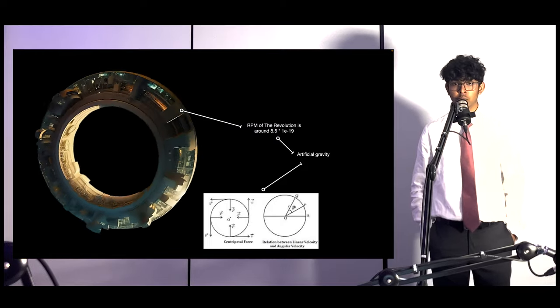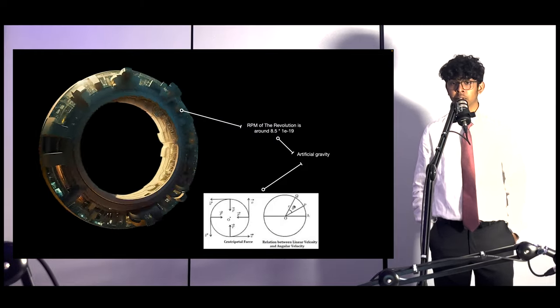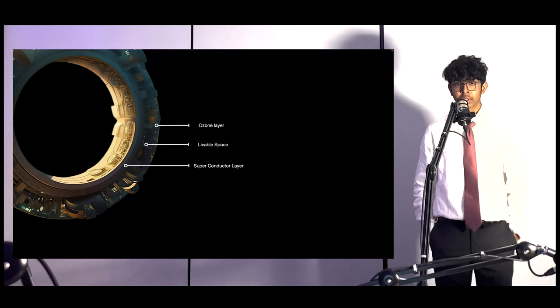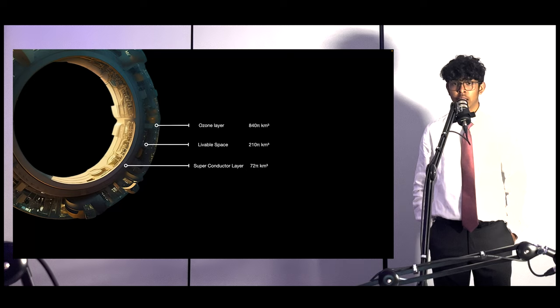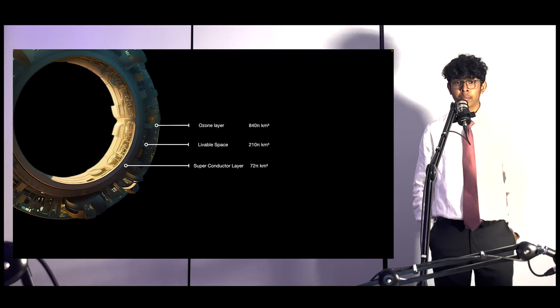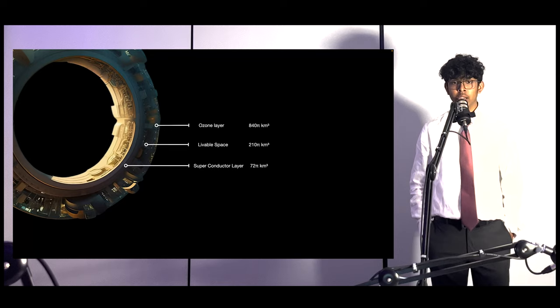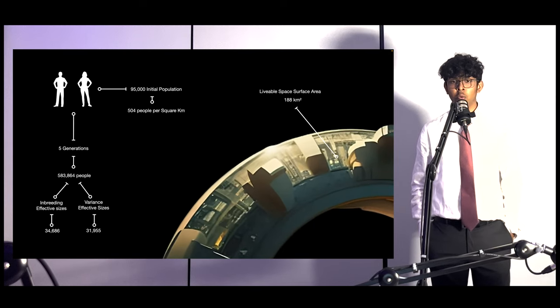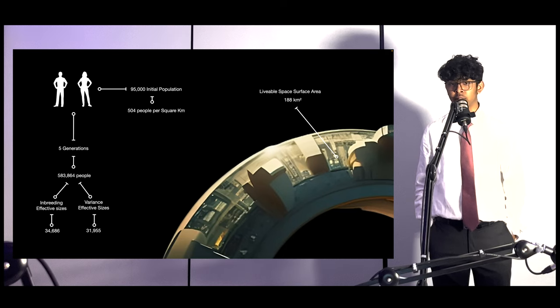Our torus has three layers: ozone, livable space, and superconductors for artificial gravity. The total leg room is 60π kilometers squared, and the volume of the ozone, livable, and superconductor layers are 840π kilometers cubed, 210π kilometers cubed, and 72π kilometers cubed, respectively. In a total area of approximately 188 kilometers squared will be a population of 95,000. The density is above 504 people per square kilometer.